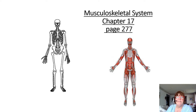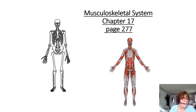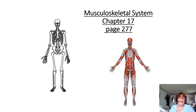The musculoskeletal system is in chapter 17 on page 277. I'm just going to give you a quick overview. You should have answered your handout on pre-mobility, so this is just a review.